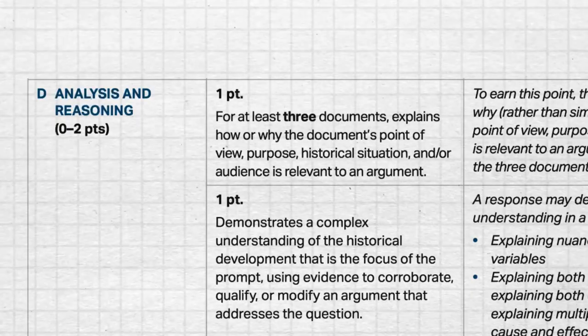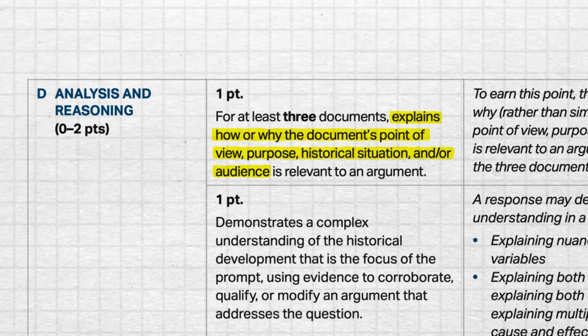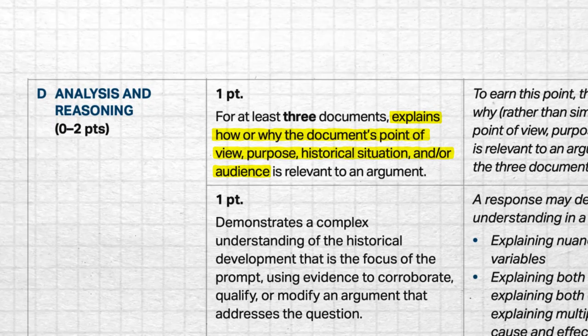They give the student four options for performing the skill. They can discuss the document's historical context, audience, purpose, or point of view. And then they have to demonstrate why that analysis is significant to their argument — and that's where we get HAPPY from. Sometimes students get confused and think they have to choose three documents and perform all of those sourcing skills for each document, but no — they only have to perform one skill for each of the documents they choose.